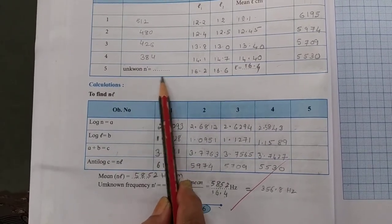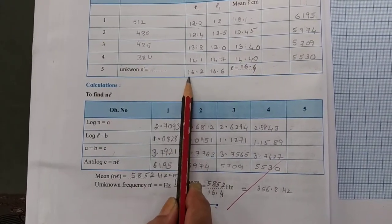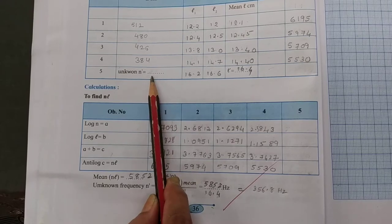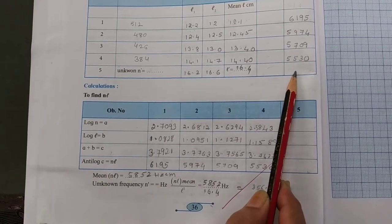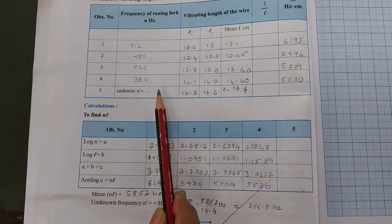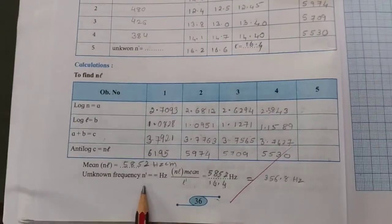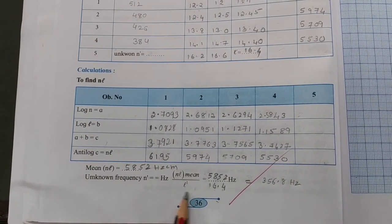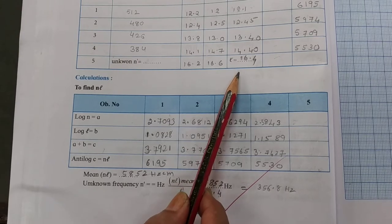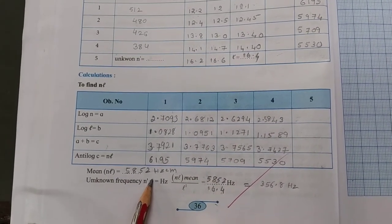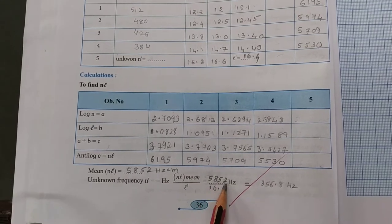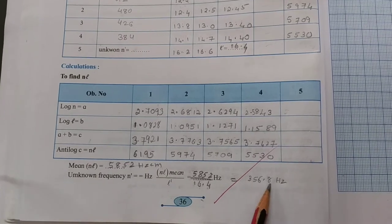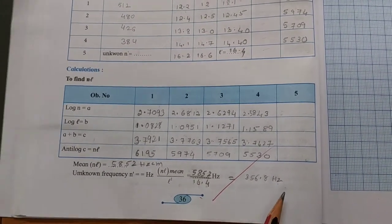We have taken a reading for an unknown frequency. We don't know the frequency. We have taken the reading in the same way. Since n is not known, we cannot find nl for that. We are going to find the unknown using this formula. Unknown frequency will be equal to nl upon l dash. L dash is 16.4. Mean nl is 5852. So, 5852 divided by 16.4 gives out 356.8 hertz. That is the unknown frequency.